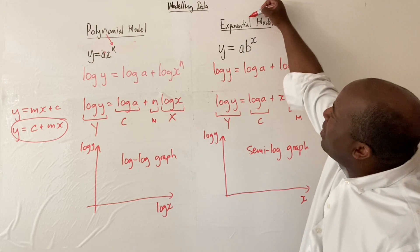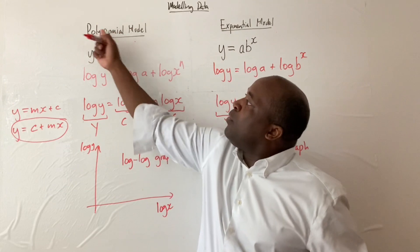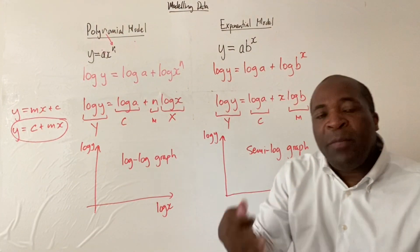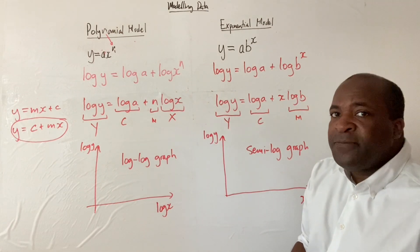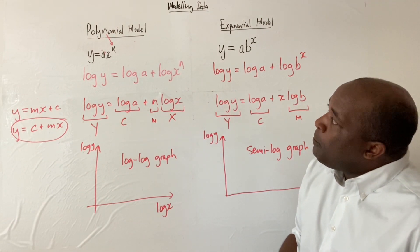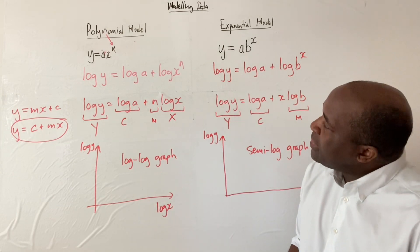One L, one log in exponential equals semi-log, and two Ls in polynomial equals log-log. That might be a useful way of recalling which function, which type of model maps back to the graph.